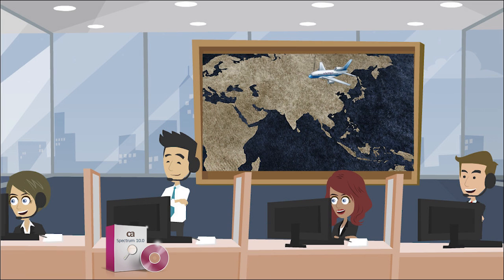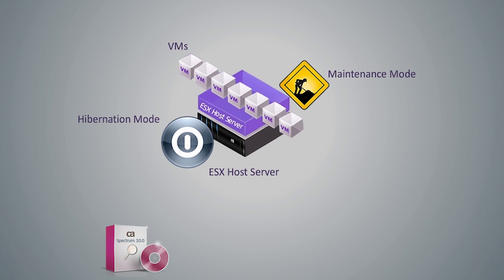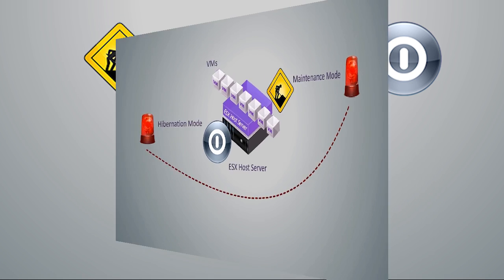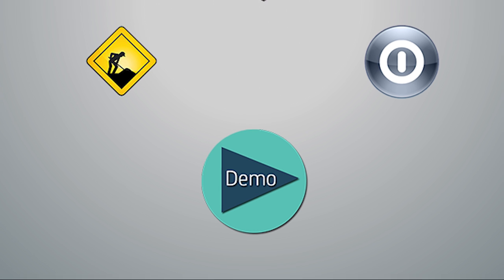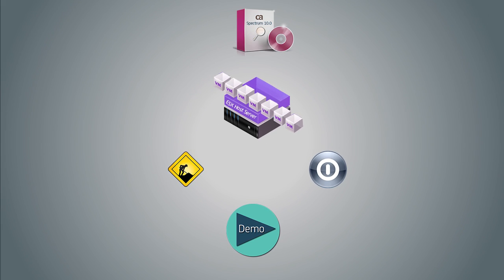Dave is also looking to use the feature where he can place an ESX host in hibernation mode. When the ESX host is placed in hibernation mode, all the VMs under the ESX host are automatically placed in maintenance mode. The maintenance alarms on the VMs are correlated to the ESX host hibernation alarm. Let's now watch a demonstration on using the maintenance and hibernation modes for ESX servers in CA Spectrum 10.0.